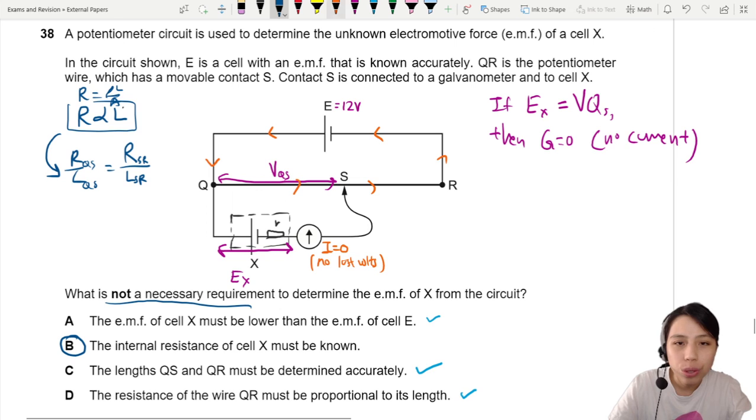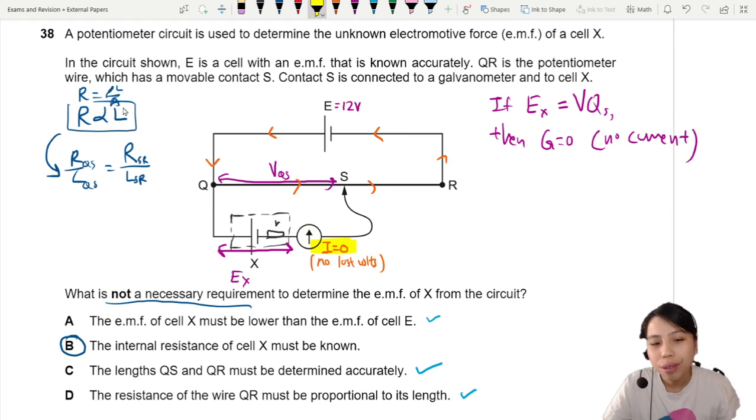So at the end of the day, the one that we can choose that is most sure is that we don't need internal resistance. We don't care because there's no current flowing through this battery down here if you are finding your balance point. That's the whole purpose of how potentiometers work. So that's all for this video. See you in the next one.